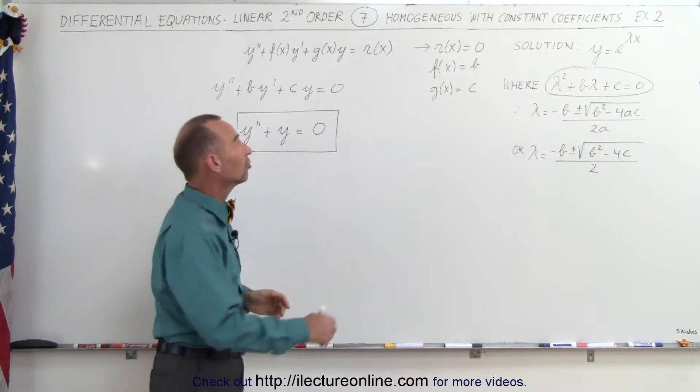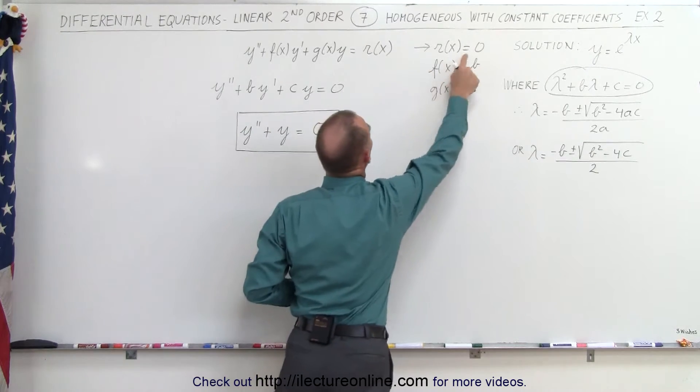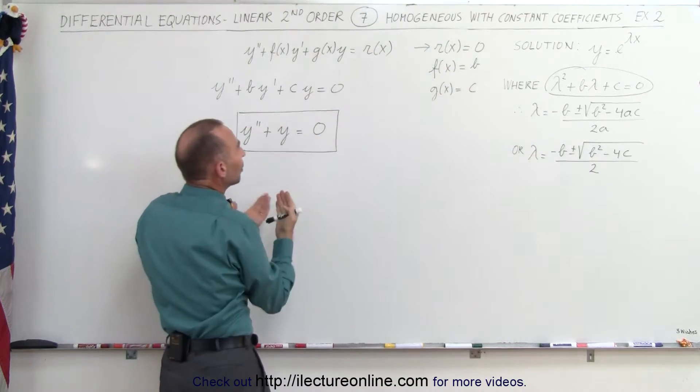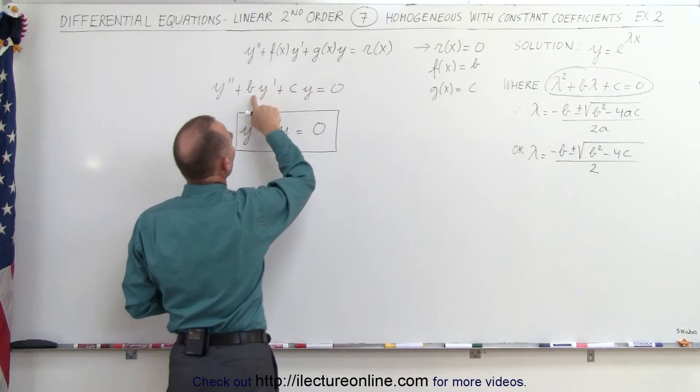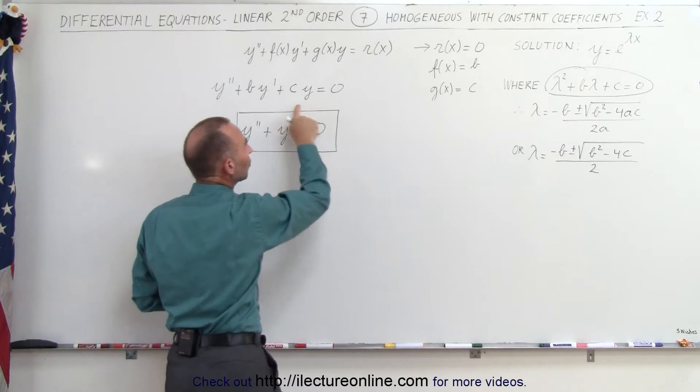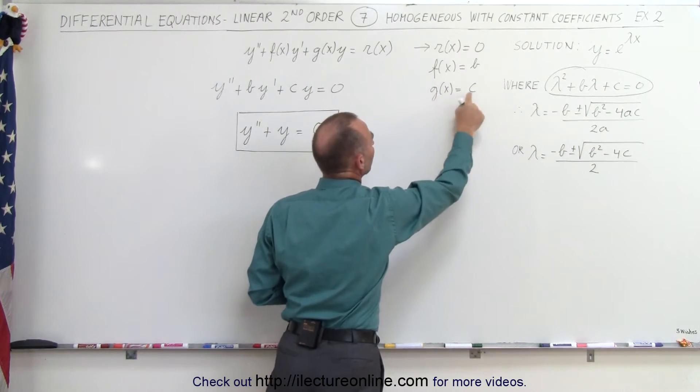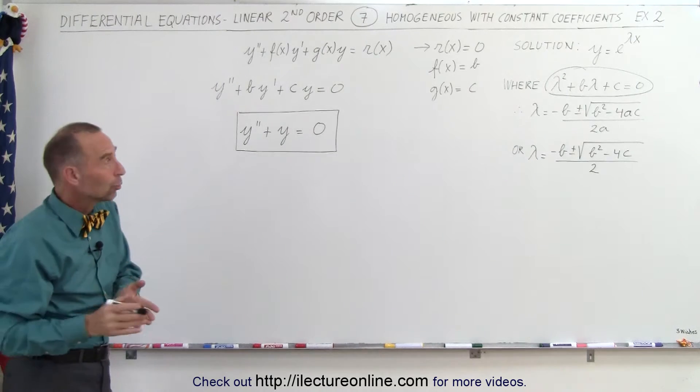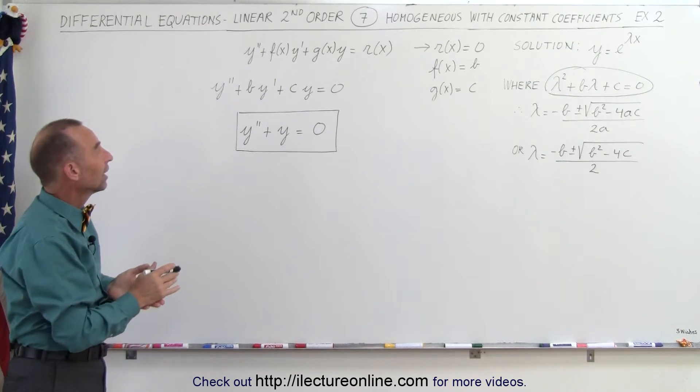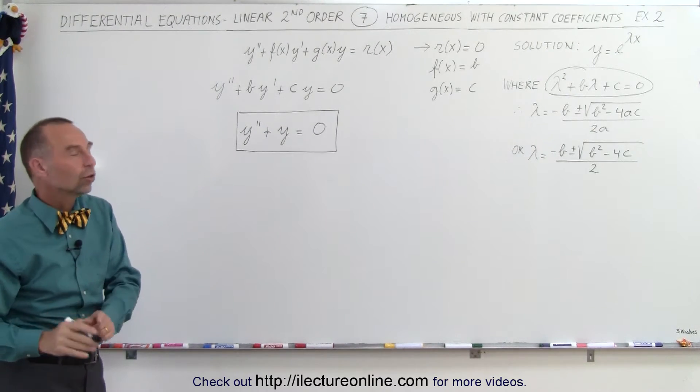Now, to make it homogeneous, we allow r of x to go to zero, and then to make it one with constant coefficients, we replace the two functions f of x and g of x by two constants, and let's call them b and c. So f of x becomes b, g of x becomes c. Now we have a differential equation that is a second-order linear differential equation that is homogeneous and has constant coefficients.